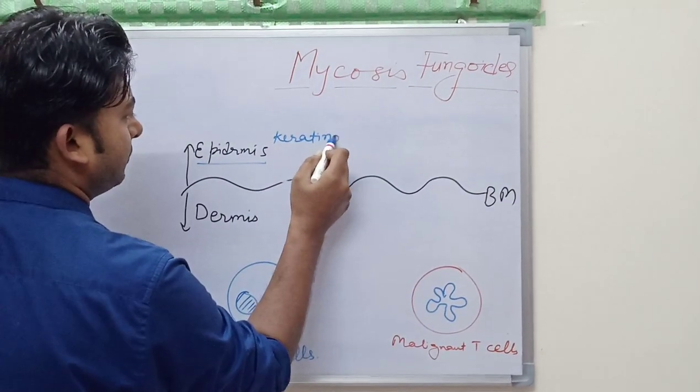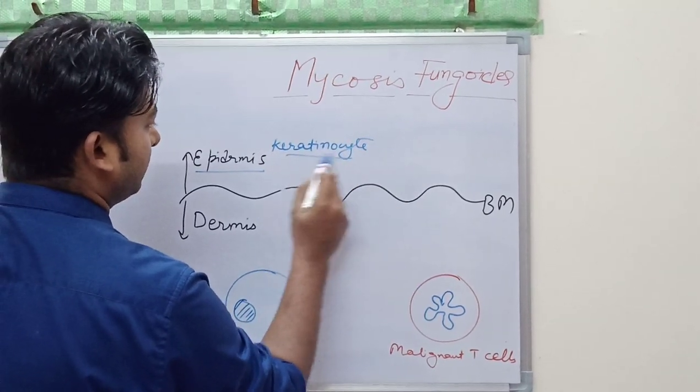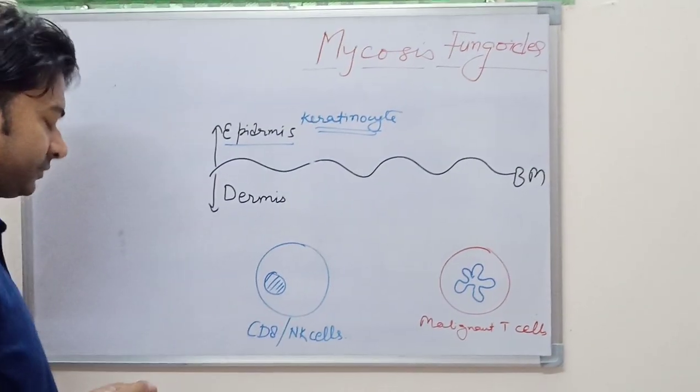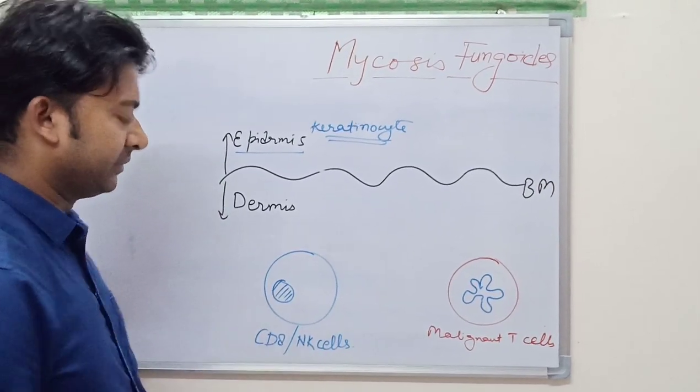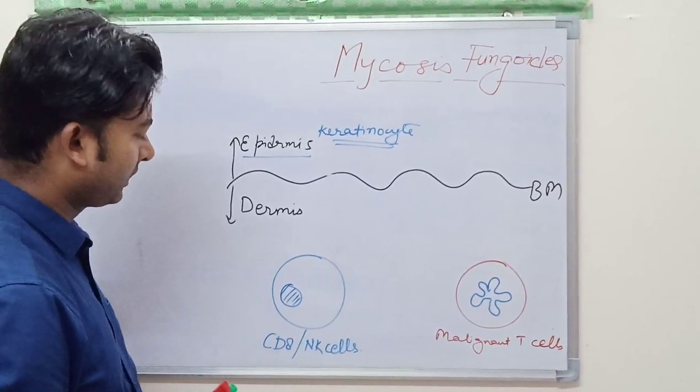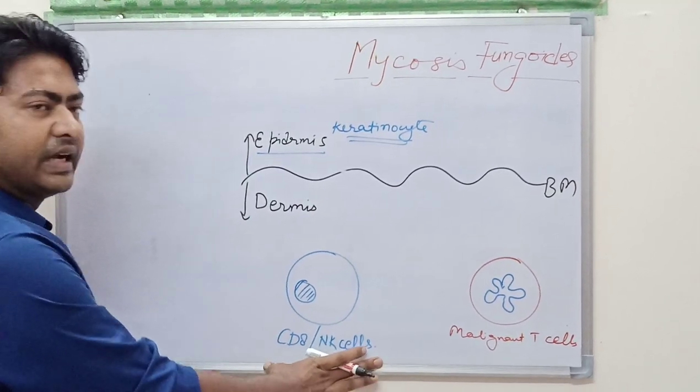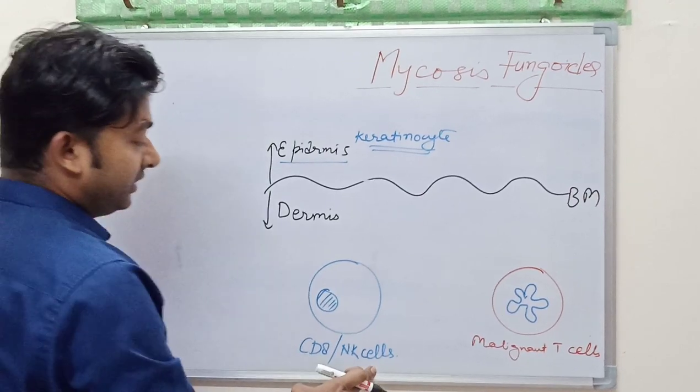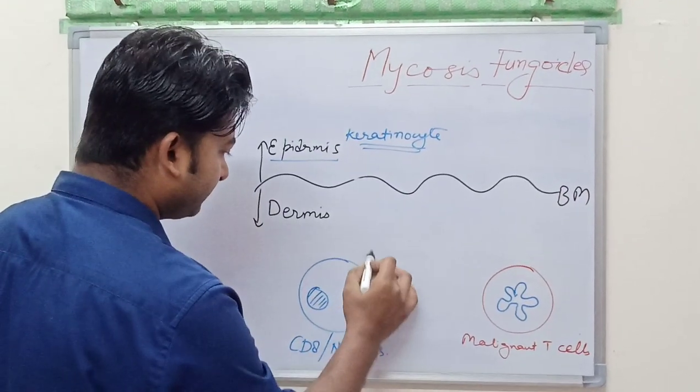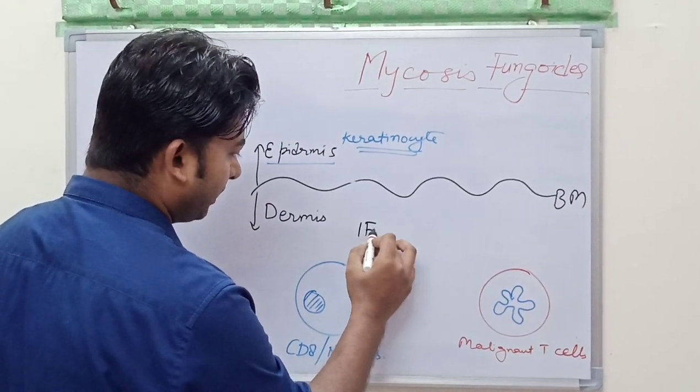We also have CD8 or NK cells. In epidermis the most abundant cell is keratinocyte, as we all know. So what happens when there is malignant T cell in the dermis, these reactive cells, these reactive CD8 and NK cells, they produce interferon gamma.